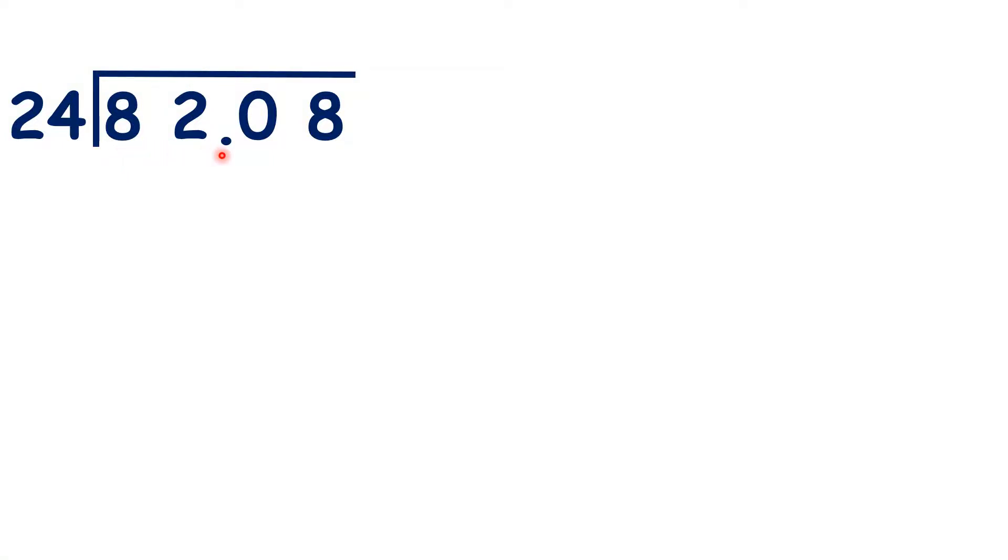We have 82.08 divided by 24, so we can use our usual method of long division. But because we have a decimal point in our dividend, we need to copy up that decimal point into our answer. Now that we've done that, we can basically ignore the decimal points and answer the question in exactly the same way as if we had 8,208 divided by 24.